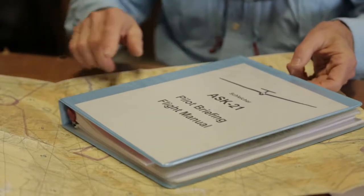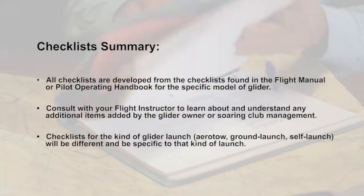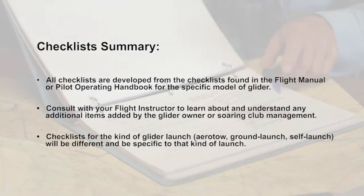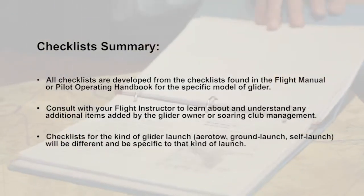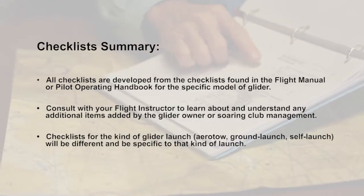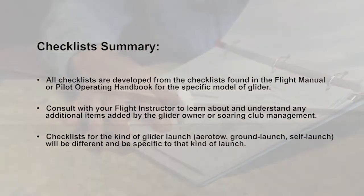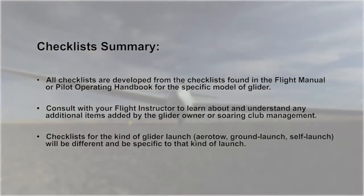All checklists are developed from the checklists found in the flight manual or pilot operating handbook for the specific model of glider. Consult with your flight instructor to learn about and understand any additional items added by the glider owner or soaring club management. Checklists for the kind of glider launch — aero tow, ground launch, or self-launch — will be different and will be specific to that kind of launch.